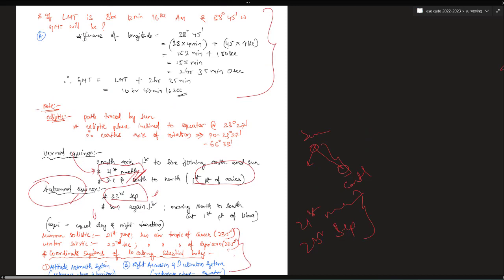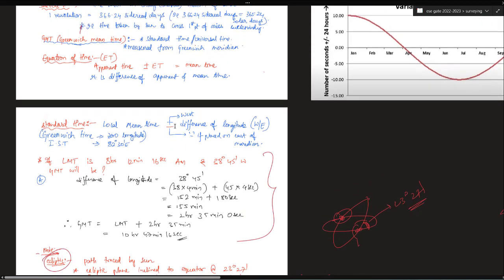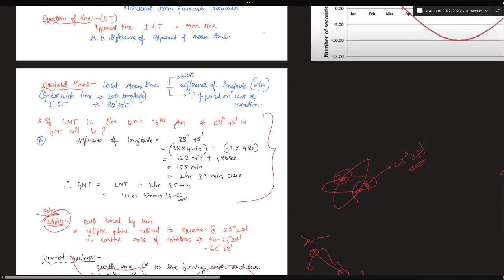Ecliptic — we just talked about it — is nothing but the great circle along which the sun travels around the earth. The ecliptic is making a certain angle with the equatorial great circle. What is this angle? That angle is 23 degrees 27 minutes. This is important for objective purpose: what is the ecliptic plane angle with the equator? That is 23 degrees 27 minutes. The points where they meet are called points of equinox — vernal equinox and autumnal equinox.